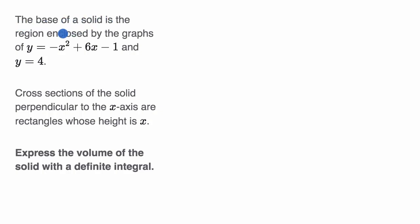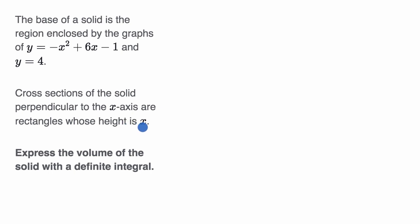The base of a solid is the region enclosed by the graphs of y equals negative x squared plus 6x minus one, and y equals four. Cross sections of the solid perpendicular to the x-axis are rectangles whose height is x. Express the volume of the solid with a definite integral.